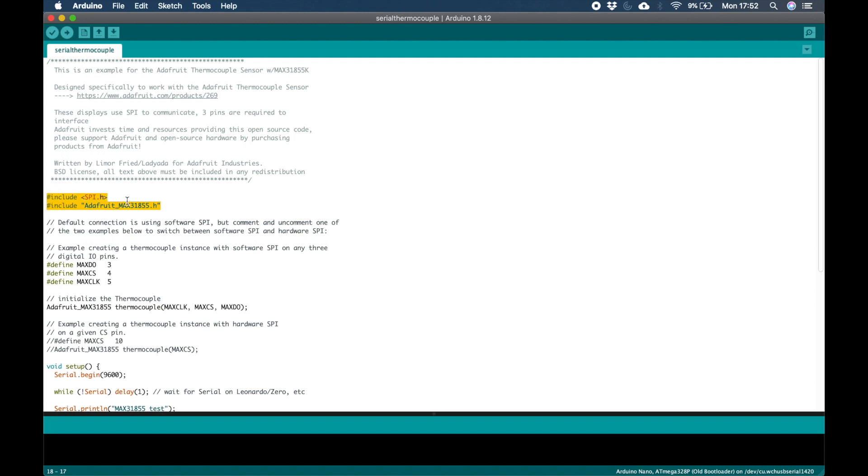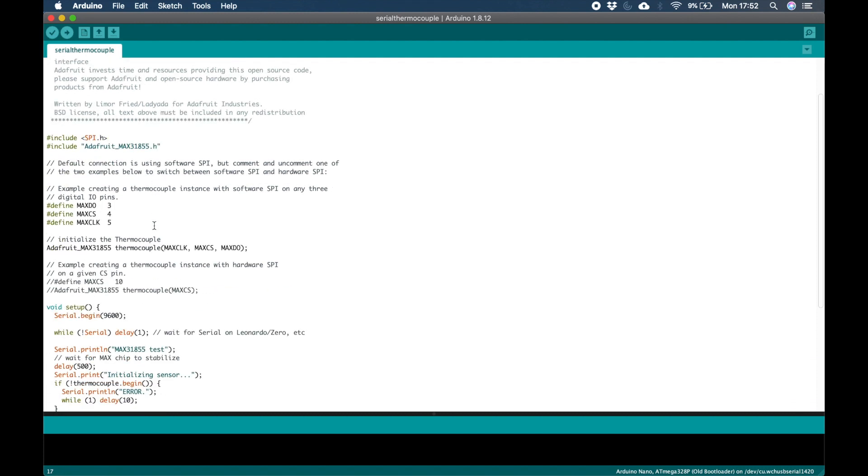Here's an explanation of the code. First we include the libraries, the SPI library and the thermocouple library. Next we define the pins for the SPI: data out on 3, chip select on 4 and clock on 5. Now we initialize the thermocouple using these pins.